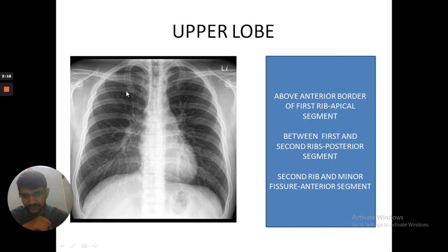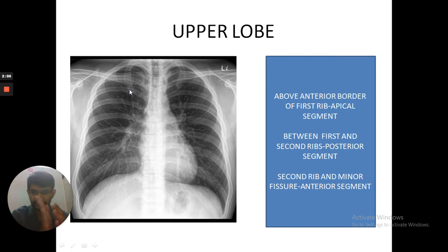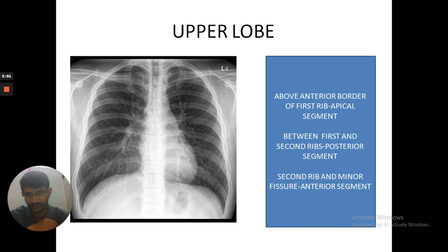You can see the anterior ribs numbered one through six and the posterior ribs. We are mainly concerned with the anterior ribs. If the lesion is above the anterior border of the first rib, it is in the apical segment of the upper lobe — bilateral.